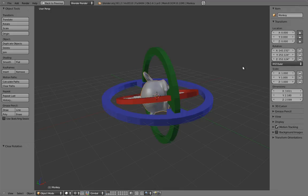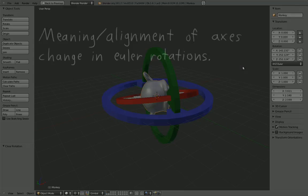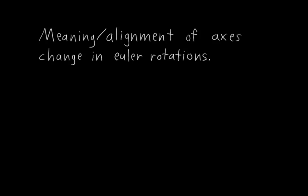However, note that it is aligned with the object's local x-axis, and I'll come back to this later, but just notice it for now. Anyway, the point of all this is that the meaning or alignment of the axes change in Euler rotations, so it's not as straightforward as a lot of people think.